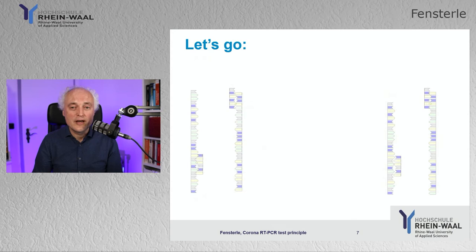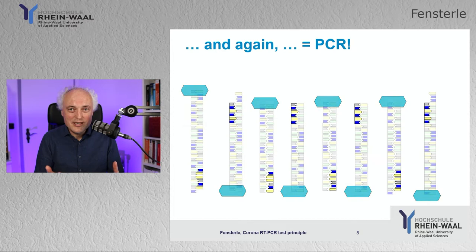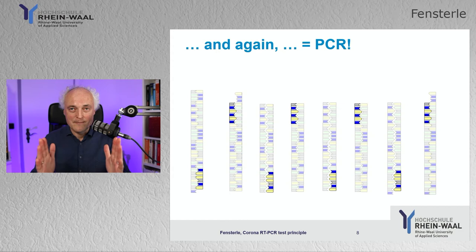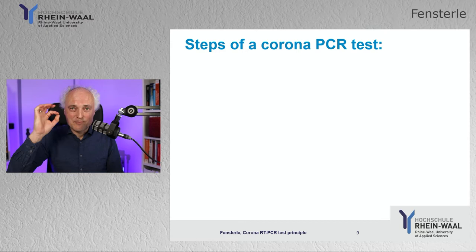You shouldn't do this just once — you repeat it. Each cycle doubles the amount of DNA. The steps are simple: separate the two DNA strands by heating to 94°C, add primers by cooling down to around 58°C, then polymerization occurs at 72°C. Repeat this for, for example, 40 cycles. This is how a PCR works.